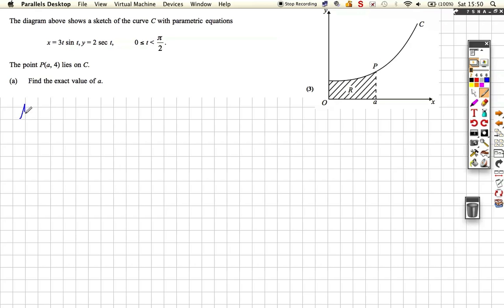And y-value 4. So at P, we can write down two equations. We can write down 1 for x, which means that A is equal to 3t sine t. And we can write down the 1 for y, but we know that y is 4 in this case at the point P.